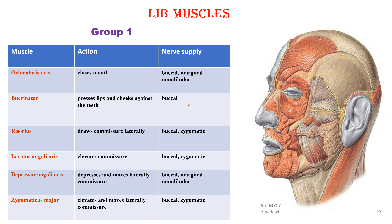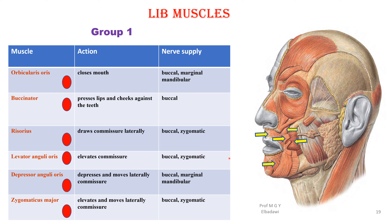The lip muscles are in groups. Group one includes the orbicularis oris and the buccinator muscle. The risorius muscle elevates the commissure. The depressor anguli oris depresses and moves the commissure laterally. The zygomaticus major elevates and moves the commissure laterally.